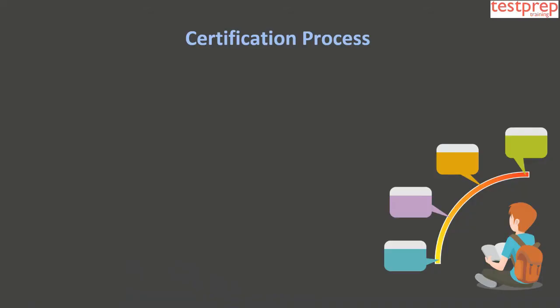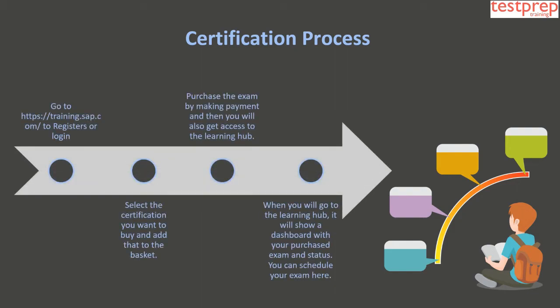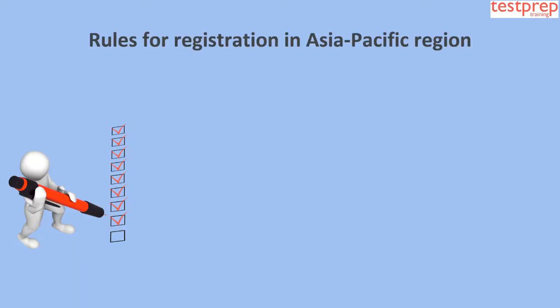Certification process — to register for the exam, follow these steps: 1. Go to the website to register or login. 2. Select the certification you want to buy and add it to the basket. 3. Purchase the exam by making payment — you will also get access to the Learning Hub. 4. On the Learning Hub dashboard you can view your purchased exam, status, and schedule your exam.